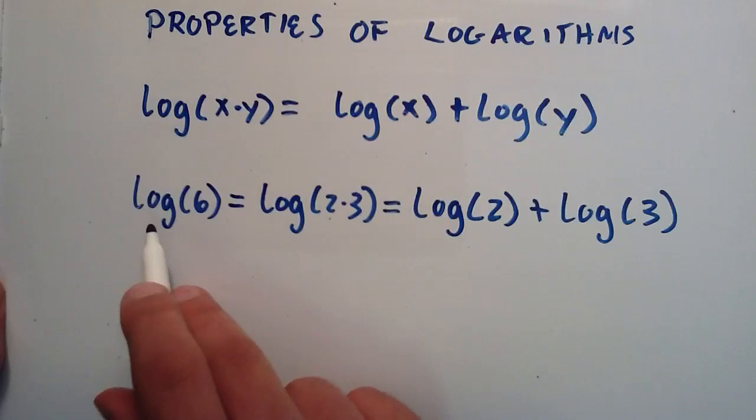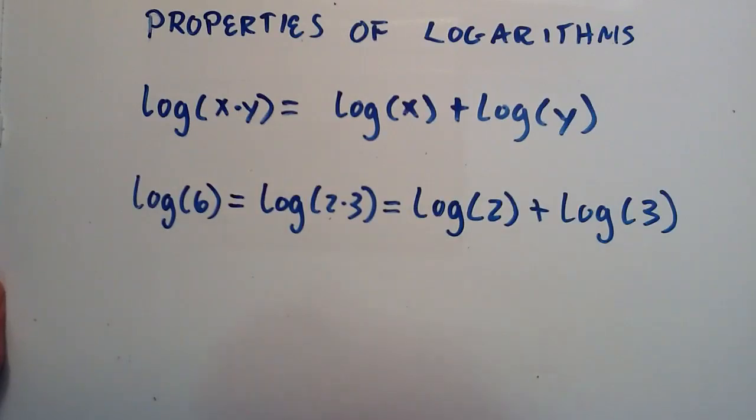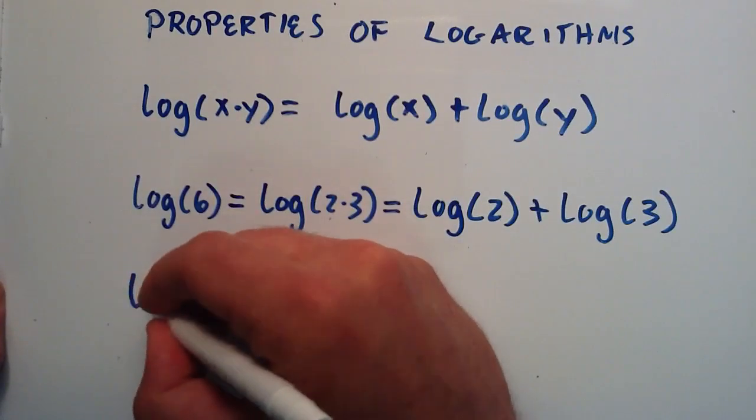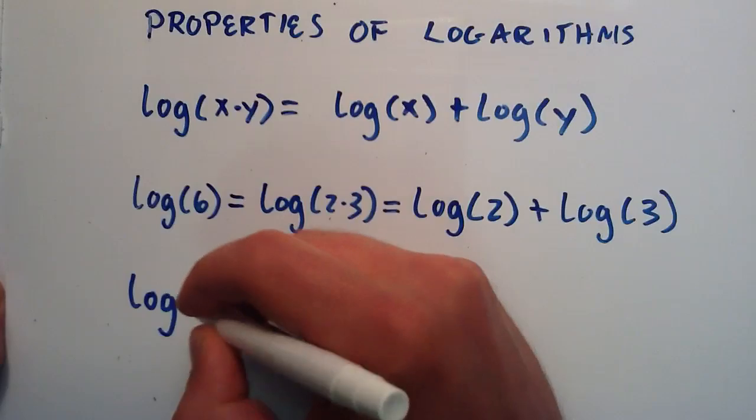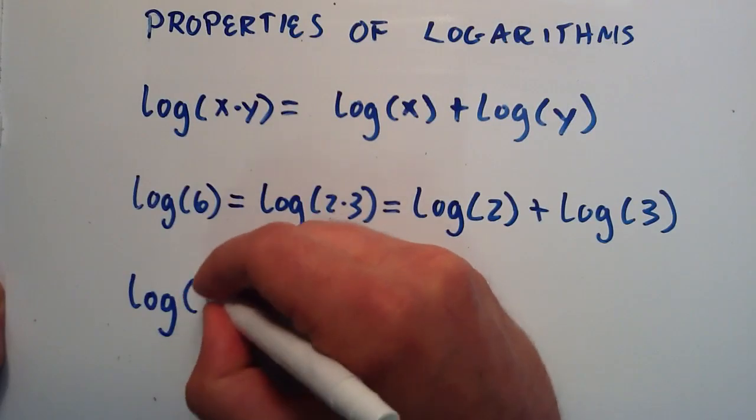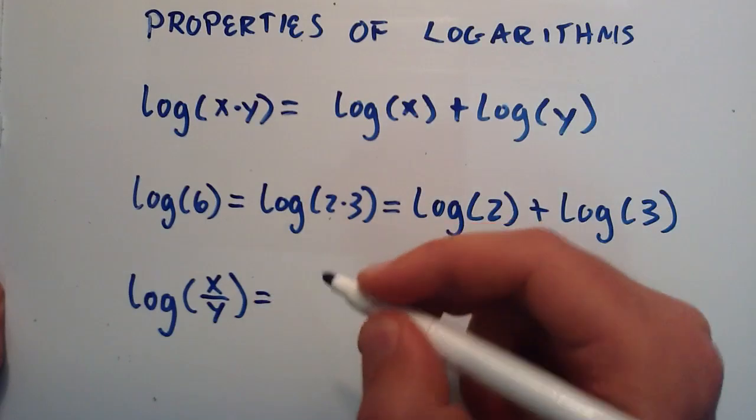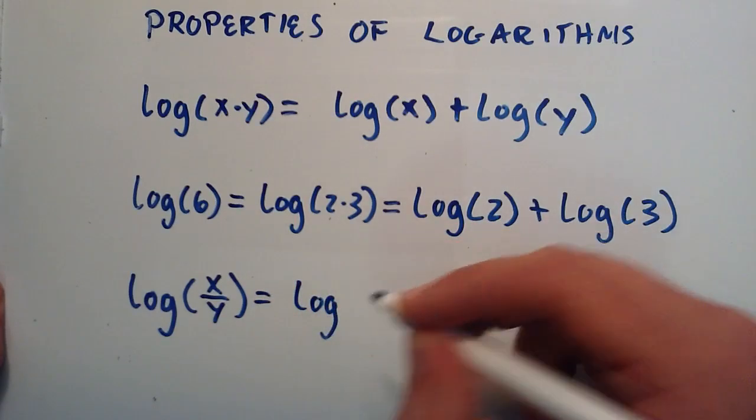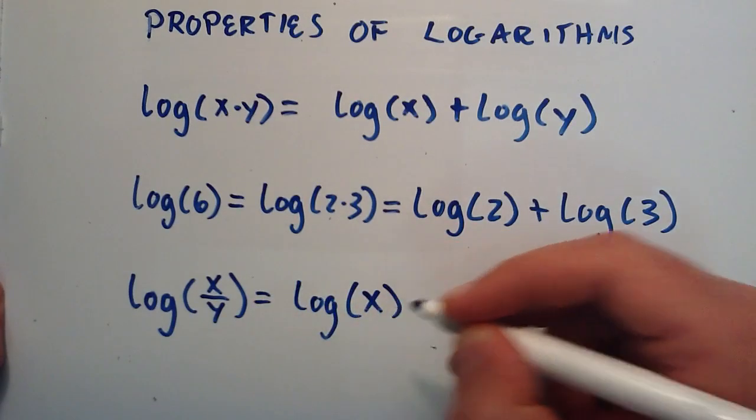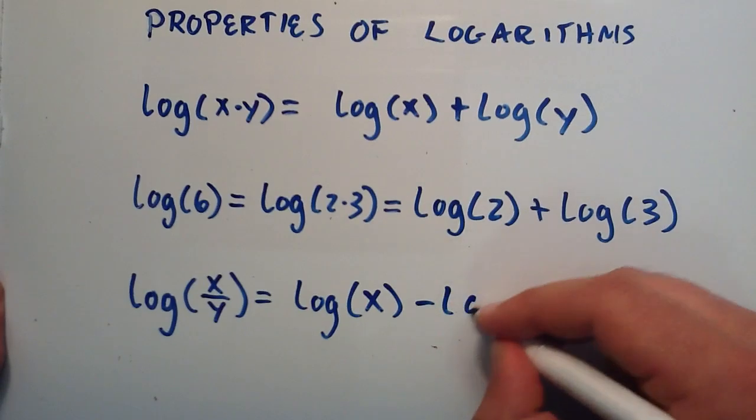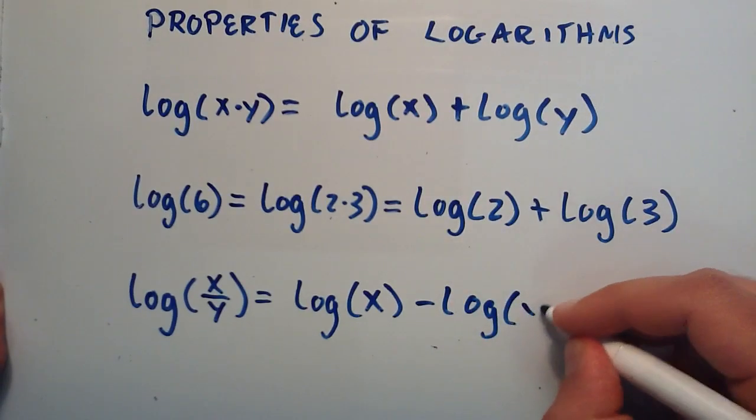So what if we wanted to write it as a subtraction? Well we also have another property that's really useful. A logarithm of a quotient, one number divided by another number, is equal to the logarithm of the numerator minus the logarithm of the denominator.